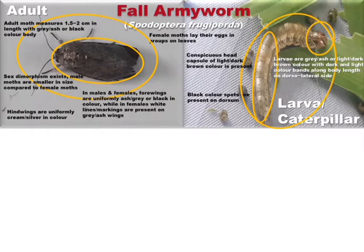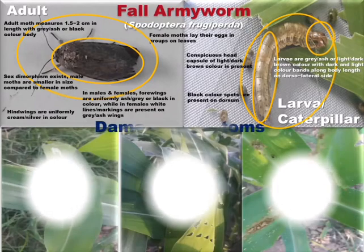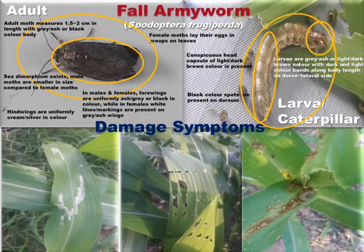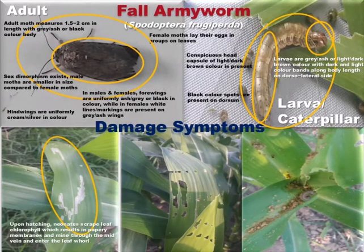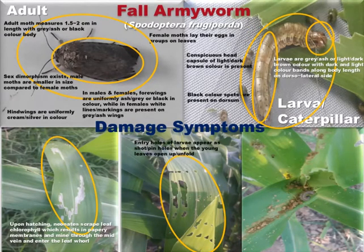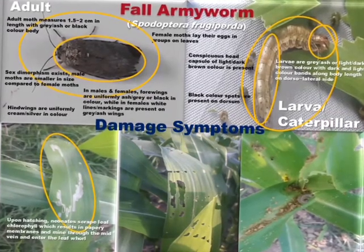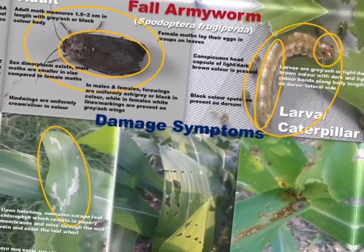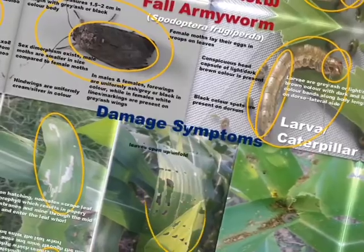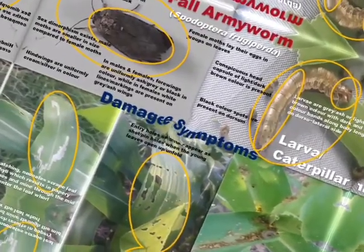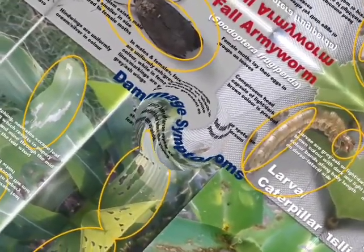Gravid female moths lay their eggs in groups on leaves of the maize plants. Upon hatching, the neonates start scraping the leaf chlorophyll, which results in papery membranes on the leaves. Later, they mine through the midrib and enter the leaf whorls and feed inside the leaf whorl. As a result, when the young leaves open up, four to five entry holes appear in line on the leaf.